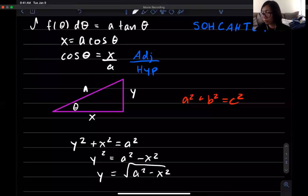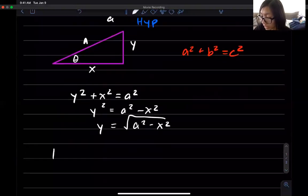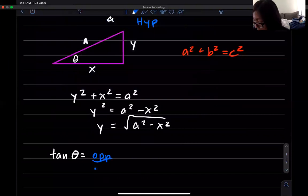Right so now that I have this opposite side I can find what tangent is. So tangent of theta is going to be opposite over adjacent right and so this is going to equal the opposite side we found was y so it's going to be the square root a squared minus x squared all over the adjacent side which is x.